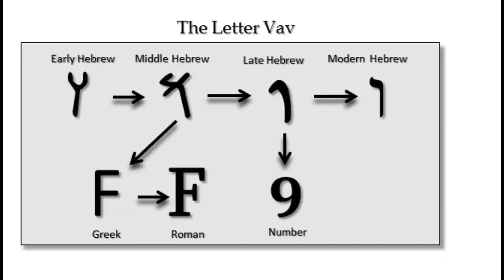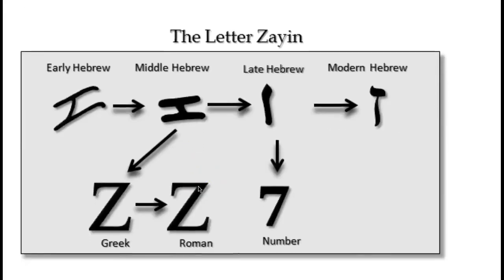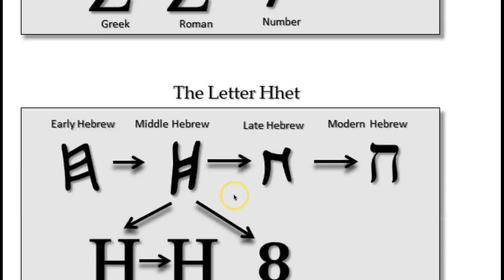The Vav makes the Oo sound like room or pool. In the early Hebrew it looks like the letter Y; then the Paleo, then late Hebrew, then modern. It comes from number six but pictographically comes from the Greco-Roman letter F. The Zion represents weapon, number seven — kind of looks like the letter I — then through the Paleo and late Hebrew to the modern, adopted as the letter Z in Greco-Roman, and it makes the Z sound.